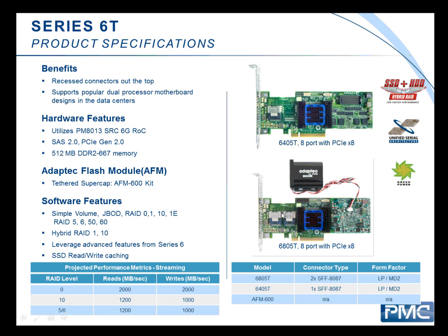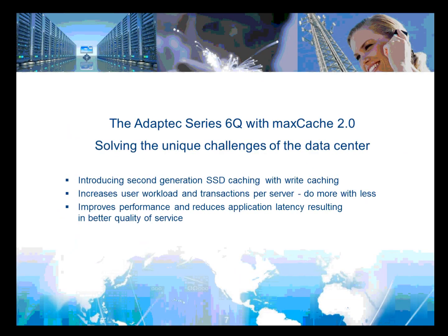The 6T is the same technology but in a different form factor, with connectors coming out of the top. These are basically made for high-density servers. Most people would buy this to use with the low-profile bracket in a 2U server. If you don't have room out of the back of the controller for the connectors, this allows you to save space and connect the controllers in that fashion.